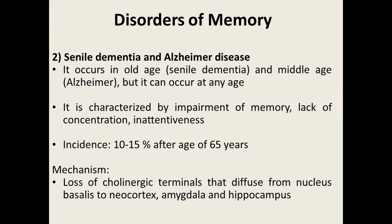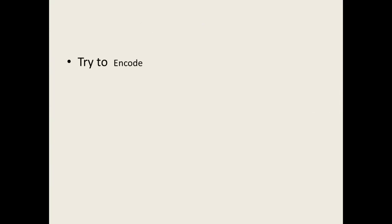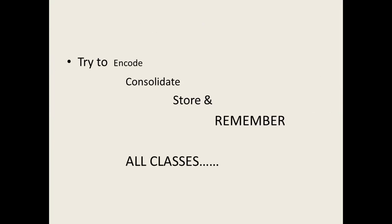There are also two disorders known as senile dementia and Alzheimer's disease. Senile dementia occurs in old age; if it occurs in middle age, it is Alzheimer's disease. It is characterized by impairment of memory, lack of concentration, and inattentiveness, with loss of cholinergic terminals that diffuse from the nucleus. There is also loss of cholinergic terminals through the neocortex and later the hippocampus, and formation of neurofibrillary tangles — tau protein tangles — in Alzheimer's disease. So try to encode, consolidate, store, and remember all these concepts. Thank you very much.